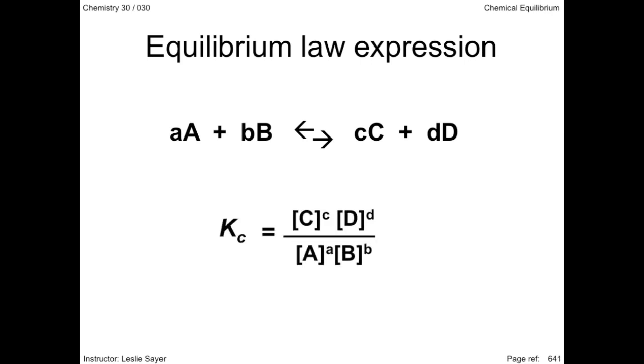then the equilibrium law expression shows that the equilibrium constant for this reaction, under the same conditions of temperature, is equal to the concentrations of the products divided by the concentrations of the reactants. Each concentration term is raised to the power of its stoichiometric coefficient, and multiplied by the other terms.